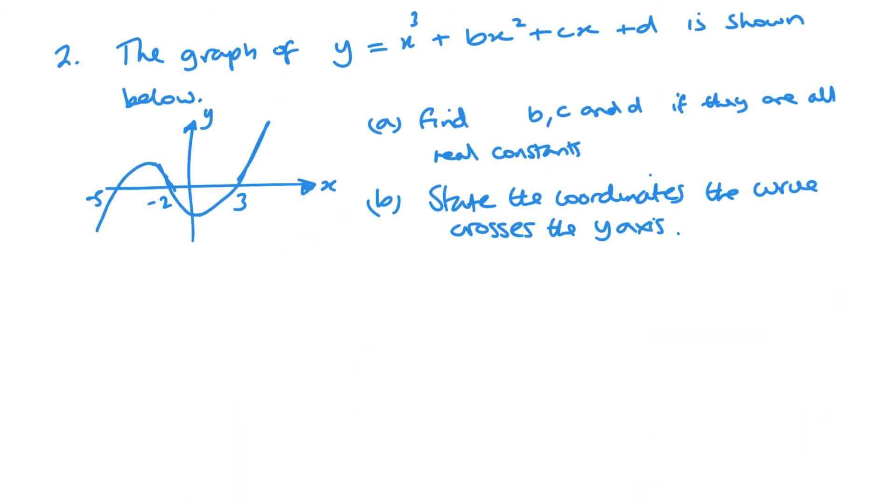So first with this one, think about the solutions. We've got minus 5, minus 2, and plus 3. So we're probably looking at x plus 5, x plus 2, and x minus 3. Now all we need to do is expand my brackets and simplify.